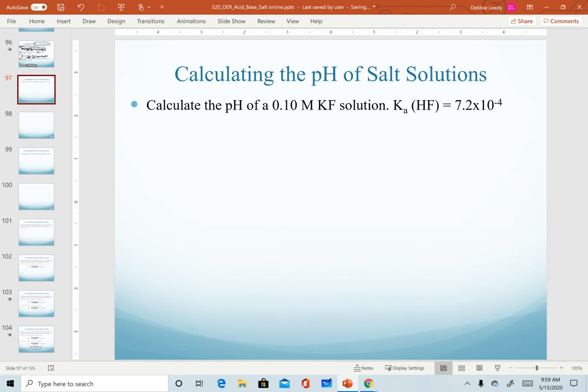Recognize in here, big hint for you, we're asked to calculate the pH of a 0.1 molar KF solution, and notice we're given the Ka of HF. We're given that because, as we look at our dissociation equation, we know that potassium fluoride will dissociate into potassium ions and fluoride ions.